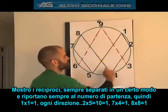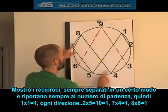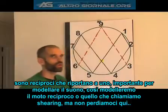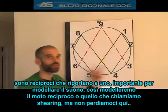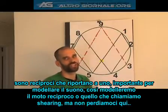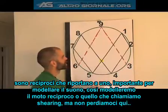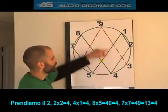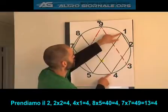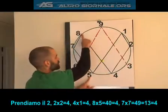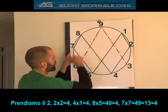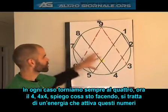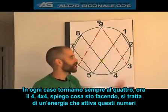So if 1 times 1 equals 1, every direction: 2 times 5 is 1, 7 times 4 is 1, 8 times 8 is 1. They form reciprocals that always come back to 1 — very important in modeling sound, as this is how we'll model reciprocal motion or shearing. Now let's look at another number: 2. 2 times 2 is 4. 4 times 1 is 4. 8 times 5 is 40, which reduces to 4. 7 times 7 is 49, which reduces to 4. No matter which way you go, they always reduce back to the original product, which was 4.